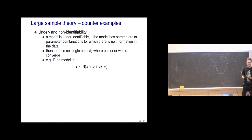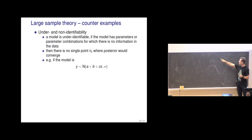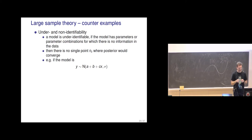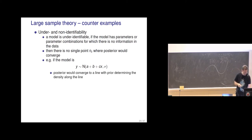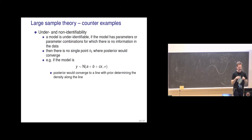With infinite data we still have a line of points all having maximum likelihood and maximum posterior there. So the posterior would converge to a line, and then the prior determines the density along the line. Getting more information does not help us identify where on that line we are, and the prior may determine where the mode is, but we're not converging to a point.